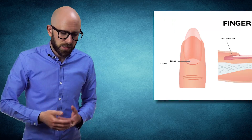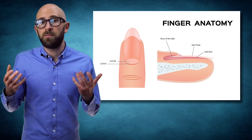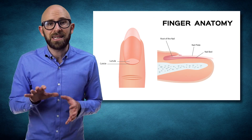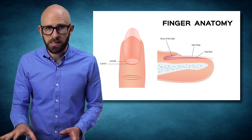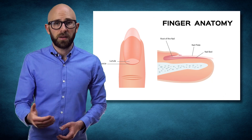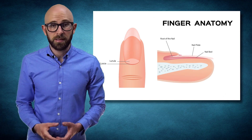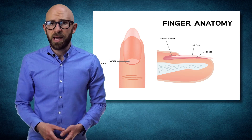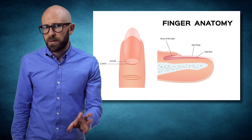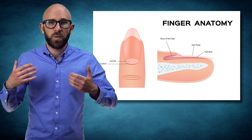Our nails consist of many different parts. The first part we can see is known as the nail plate. Below the plate is the nail bed. The white half-moon shaped part at the base of the nail is called the lunula, also known as the distal matrix. The tissue over the top of the matrix is called the cuticle. About 90% of the nail itself is grown from this matrix.